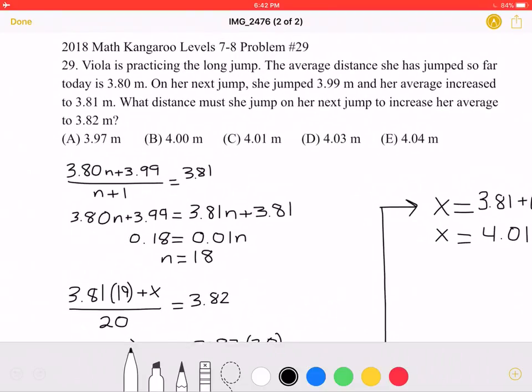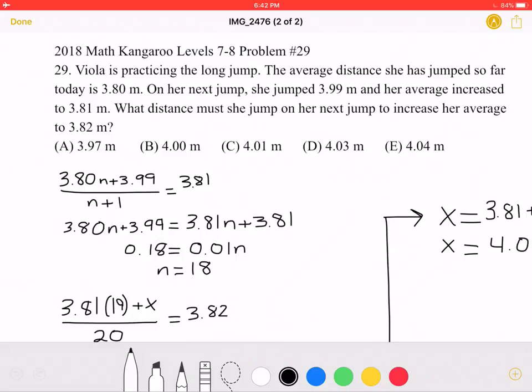To start, let's let n equal the number of jumps she has done so far. As it states in the problem, the average distance she has jumped so far today is 3.8 meters, and on her next jump, she jumps 3.99 meters, and her average is now 3.81 meters.